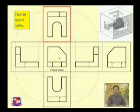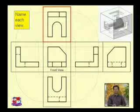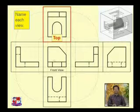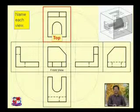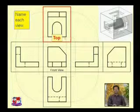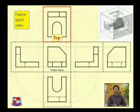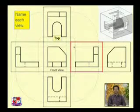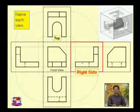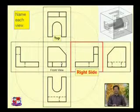First, name each view. This is the front view — we are looking from the front side, so it appears as a rectangle like this. This is the top view, shown in red. In top view it would appear like this. This is the right hand side view — we are looking from the right side.